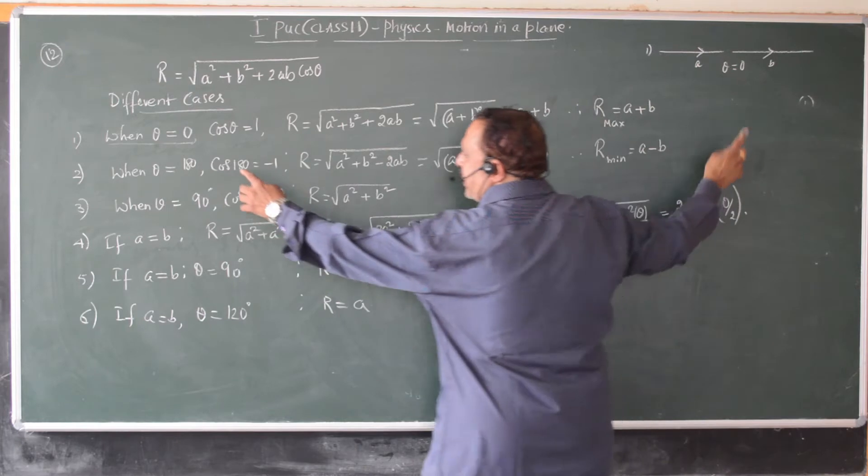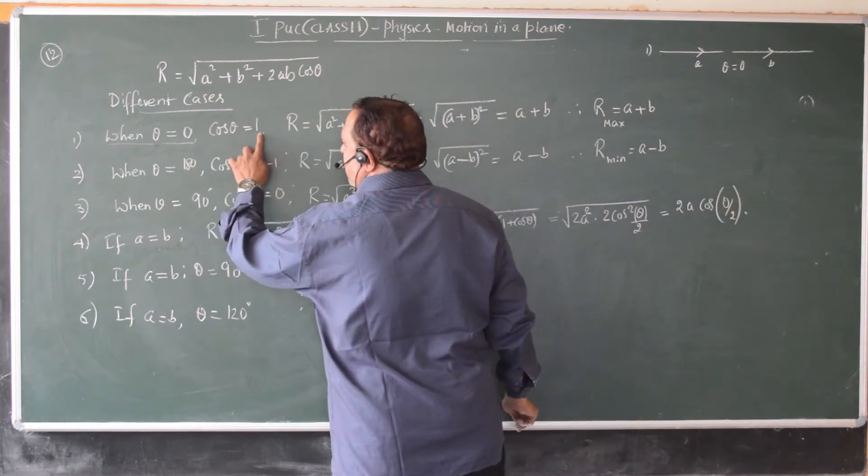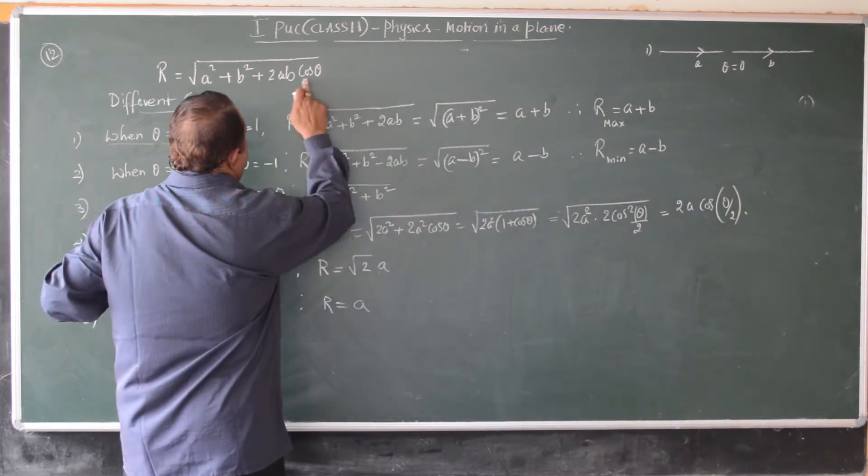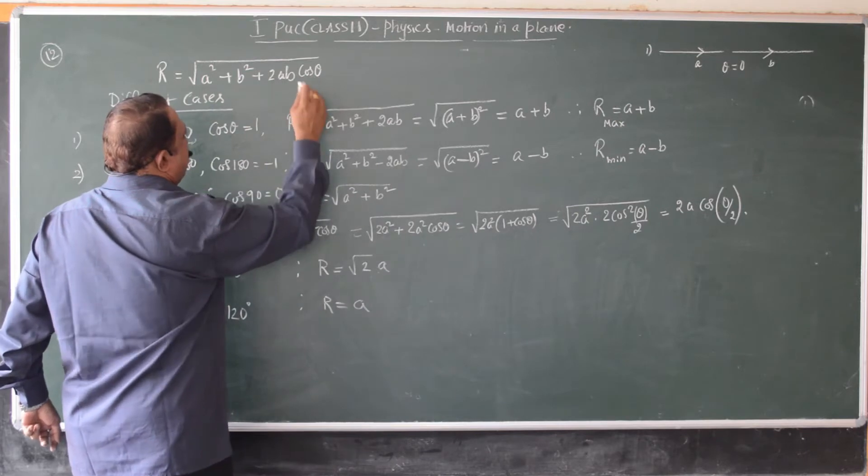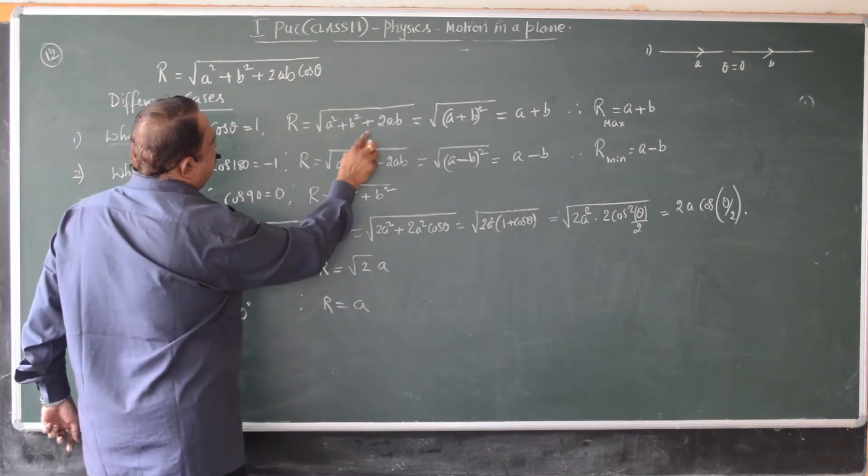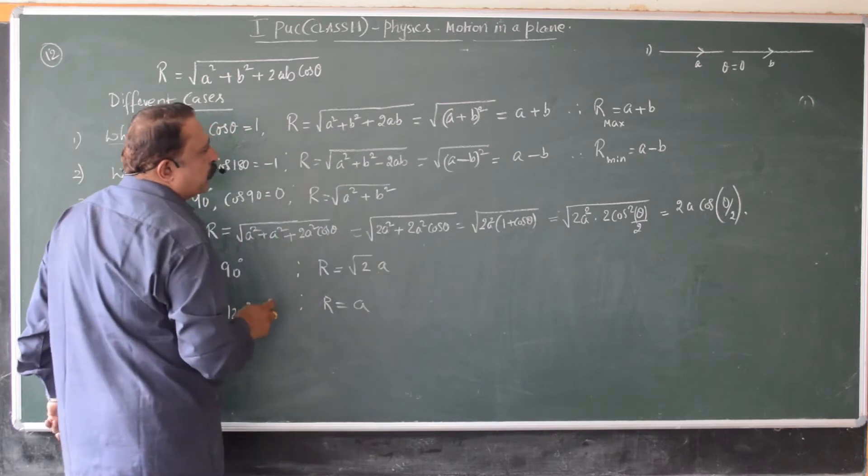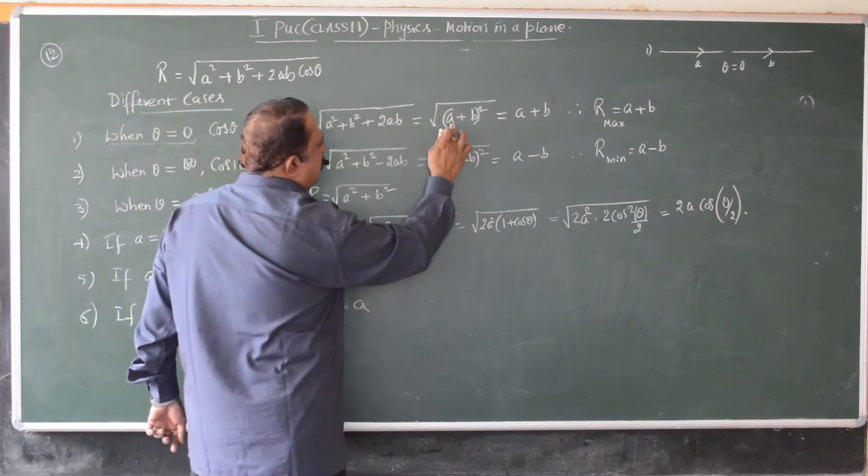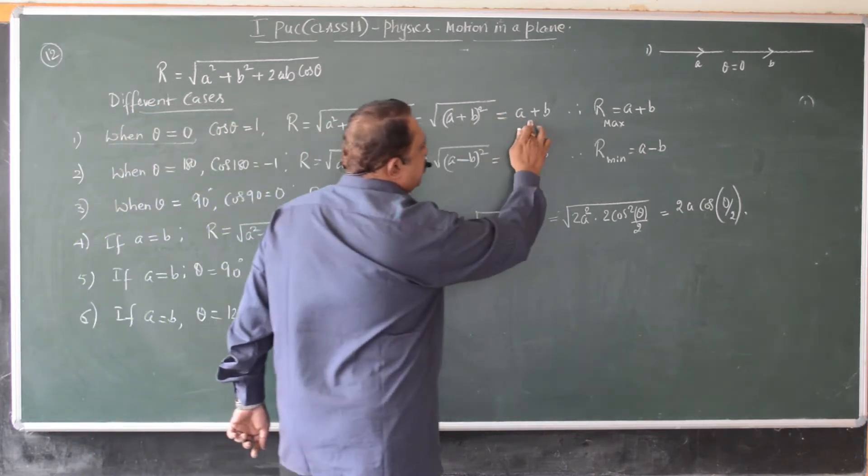And what happens if theta is zero, then cos zero is one. Now, substituting for cos theta here, it becomes root of a squared plus b squared plus 2ab into one. That is just 2ab. This is nothing but square root of a plus b whole square, which gives a plus b.